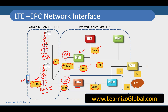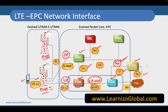The S5/S8 interface is typically the control plane and user plane interface between the SGW and PGW. The PGW connects to the PCRF by using the S7 interface, and the PCRF connects to the PDN by using the Rx+ interface. In some documents, you may also see the S7 interface referred to as the GX interface. This name comes from the previous 2G and 3G networks, where it was an interface between the GGSN and the PCRF. Since the PGW performs functions similar to the GGSN, we also refer to the S7 interface as the GX interface.